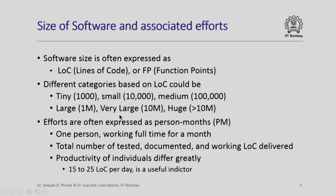Very large software is categorized by size of the order of 10 million. And of course, there are very few rare systems which are called huge because they comprise of more than 10 million lines of code.